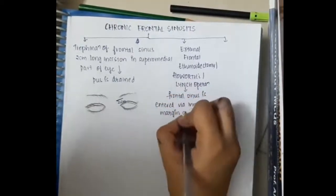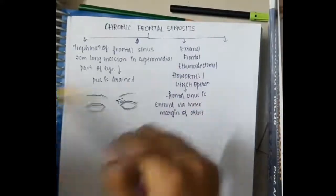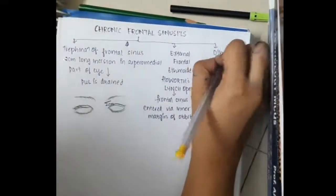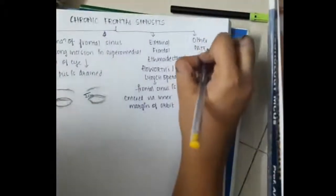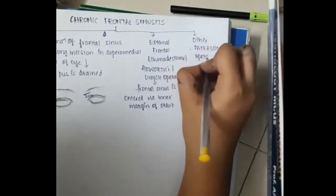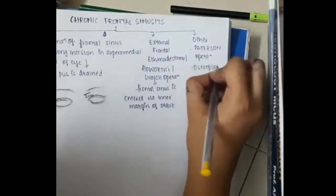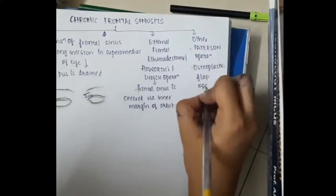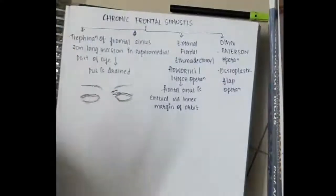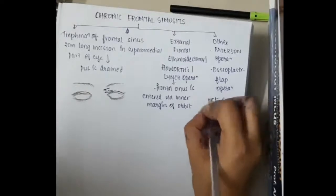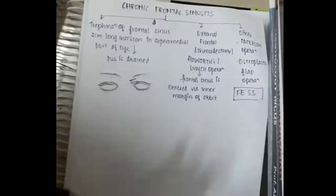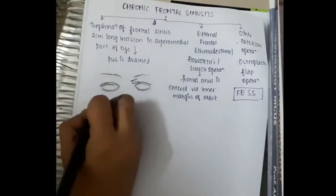Then others like we can do Patterson operation can be done or osteoplastic flap operation can be done and the most important and the one which is done nowadays is functional endoscopic sinus surgery is also done.